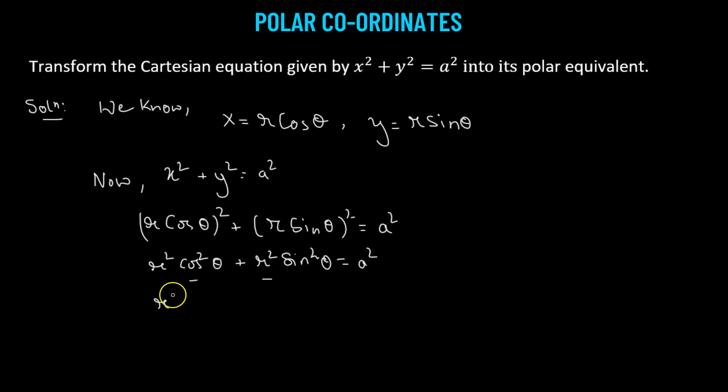Now, from the first two terms, if we take r squared as the common factor, this will get multiplied by cosine squared theta plus sine squared theta equals a squared. But that's a standard trig identity. Cosine squared theta plus sine squared theta equals 1, which gives us r squared equals a squared.